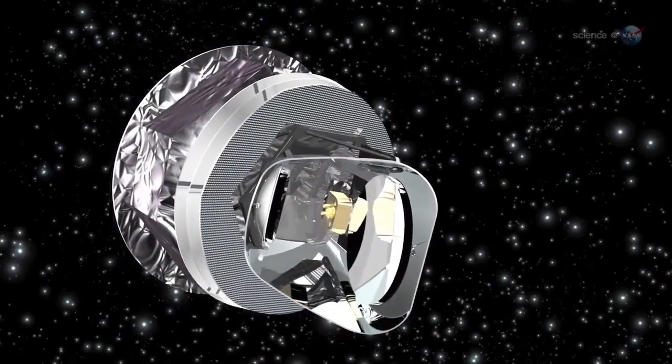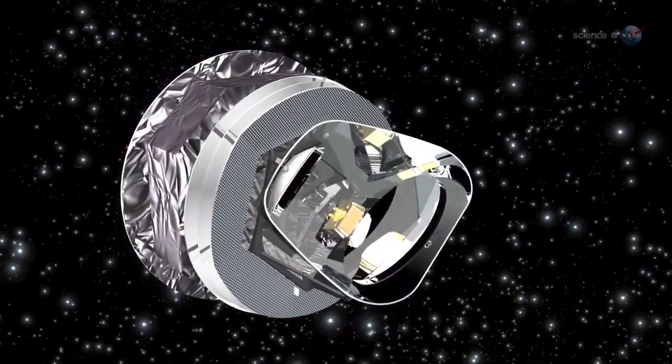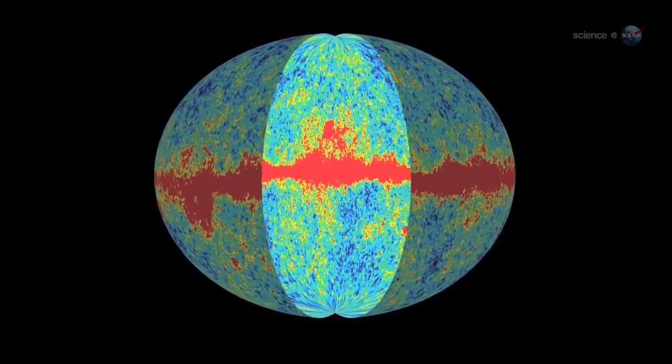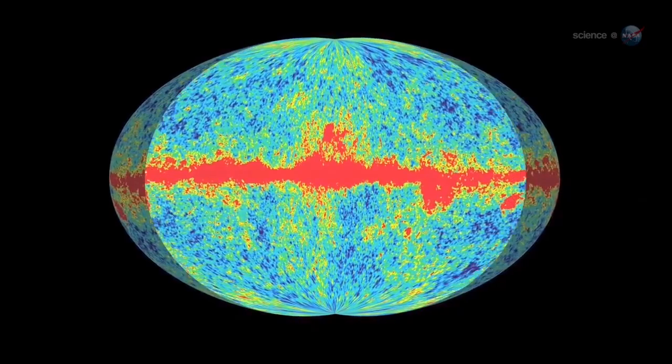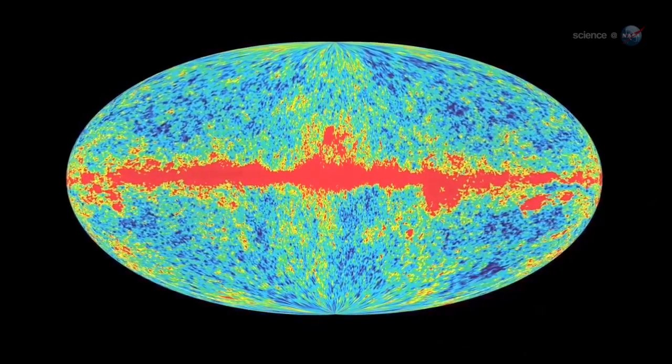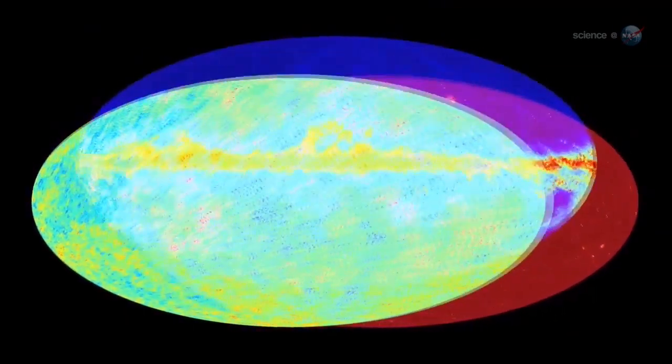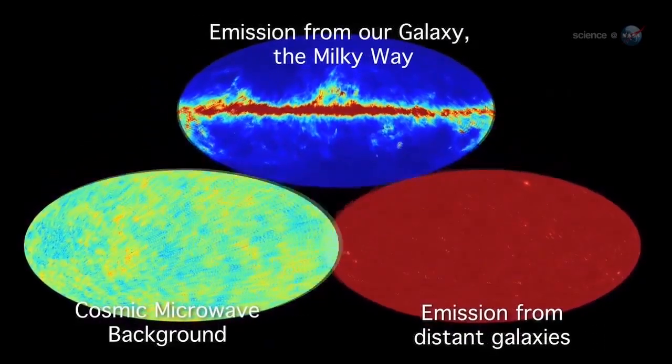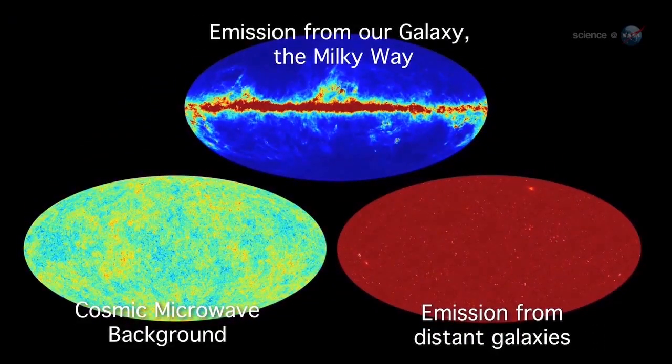In late 2013, Planck wrapped up a four-year mission to study the cosmic microwave background radiation, the afterglow of the Big Bang. To study the cosmic microwave background, Planck had to unravel everything in the foreground, and that includes microwave emissions from the Milky Way.